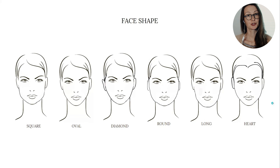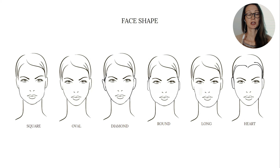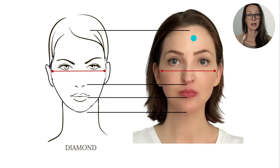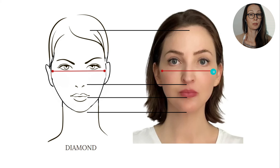Next, I also analyze the face shape to find the right hairstyles for my client. There are six possible face shapes, from square to heart. Analyzing my client, I can clearly see that her face shape is diamond — the main feature being a narrower forehead and jaw, with the widest area around her cheeks and cheekbones.